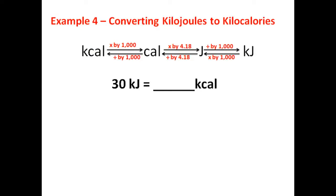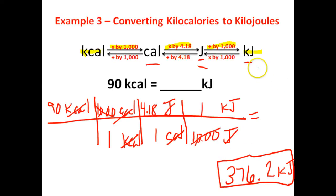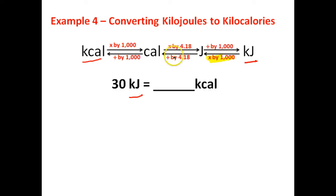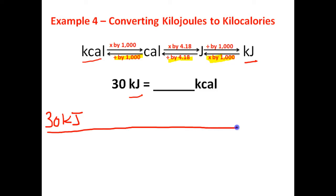In this problem here, we're going to do the exact opposite. We're starting off with kilojoules — we've got 30 kilojoules and we want to know how many kilocalories this is. So it looks like we're going to use the exact opposite steps. The first thing we're going to do is multiply by 1,000, then we're going to divide by 4.18, and then we're going to divide by 1,000. So let's go ahead and set this problem up. We've got 30 kilojoules and we want to know how many kilocalories this is. This appears to be another three-step problem.